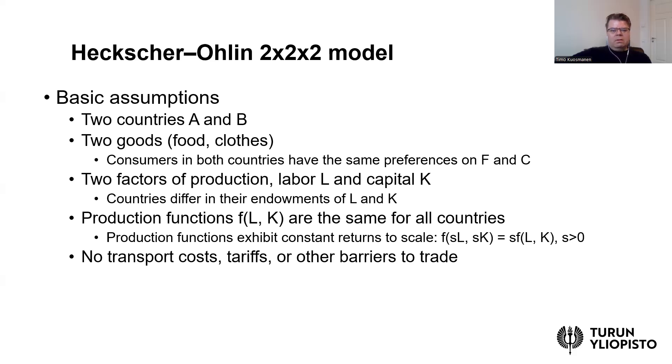Then we have two goods, food and clothes, which are often used in these types of examples. Let's assume that consumers in both countries have identical preferences on food and clothes. So I will use F for food and C for clothes. So we have two countries, two goods. And then we also have two factors of production, labor L and capital K. And here comes the essential difference between the countries. We assume that countries have different endowments of labor and capital. So one of the countries can have a bigger capital stock and another country might have a larger labor force. And this then drives the specialization.